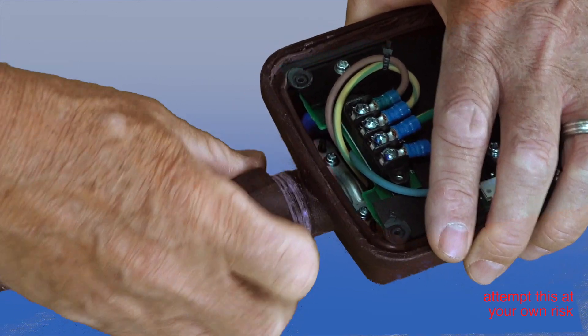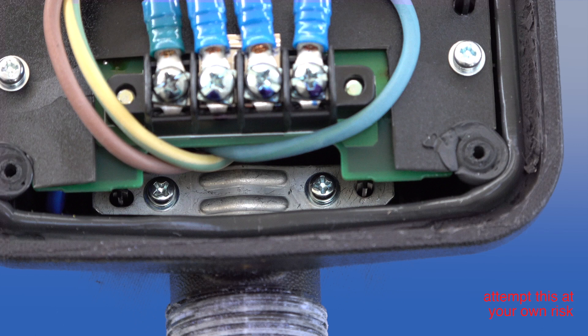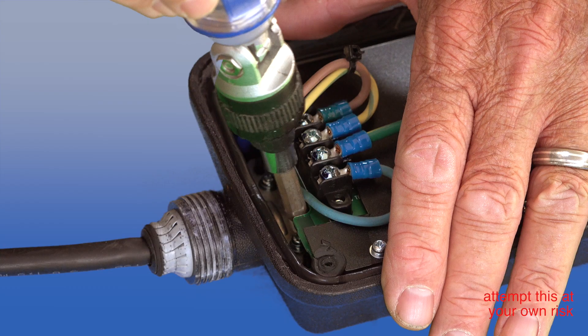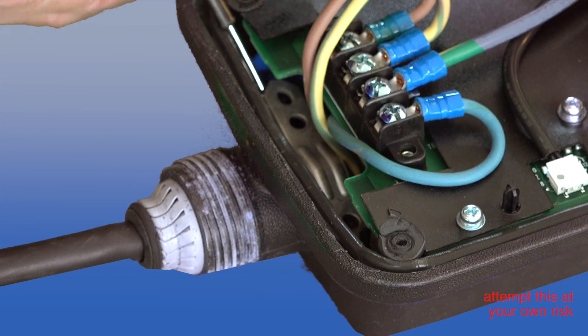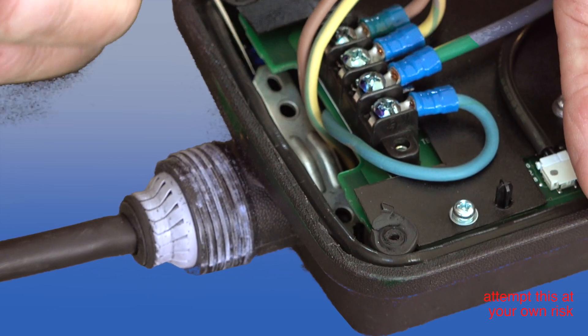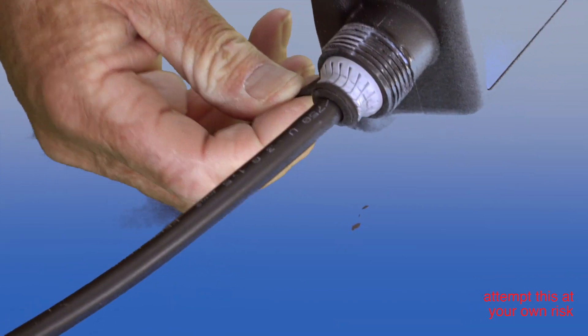The gland unscrews quite easily by hand, and now we come to undo the cable clamp. It's a bit fiddly. The screws are a little bit covered by the circuit board, so take care because you don't want to be damaging that circuit board.